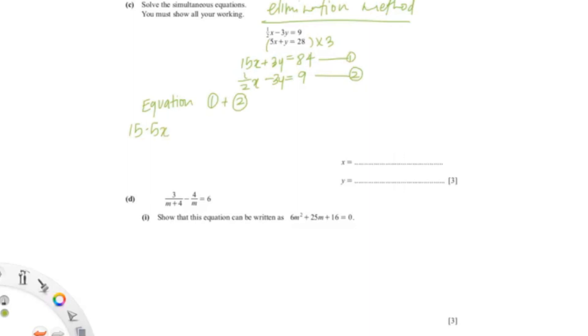So I added this. So you're getting 15.5x=93. So x=93/15.5, which would give me a value of 6.